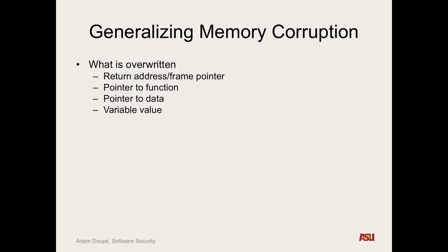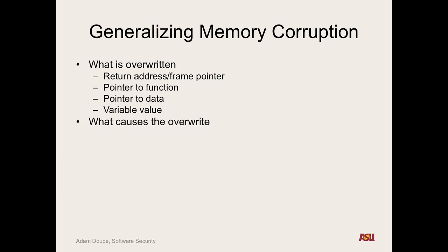Even changing a simple variable's value matters. There may be one variable that says if the user is an administrator or not. If we change that one value to be one instead of zero — just that one bit — we've taken full control over the program. What causes the overwrite? Unchecked copying can overflow and allow us to write into memory we're not supposed to.